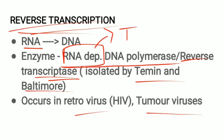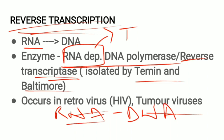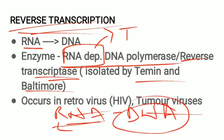The presence of reverse transcriptase can indicate the presence of a tumor. Once an RNA-DNA hybrid is present, the RNA is removed from the hybrid with the help of RNase H. One strand of DNA then acts as a template to produce a double-stranded DNA molecule.